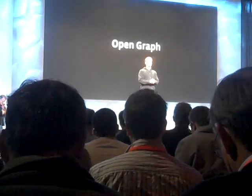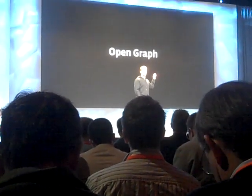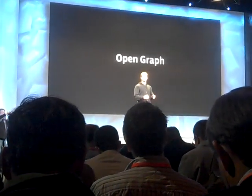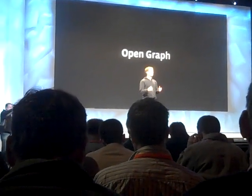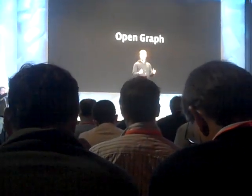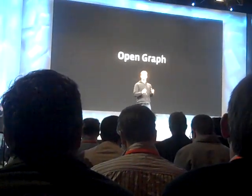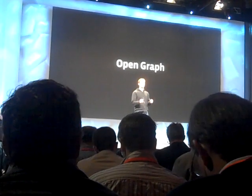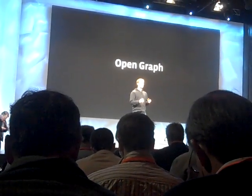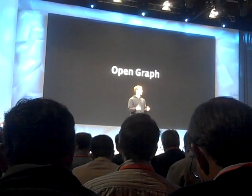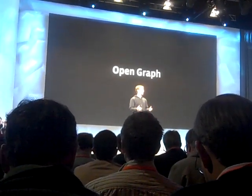There are a few key themes that we're going to be talking about today. The first is the open graph that we're all building together. Today, the web exists mostly as a series of unstructured links between pages, and this has been a powerful model, but it's really just the start. The open graph puts people at the center of the web.